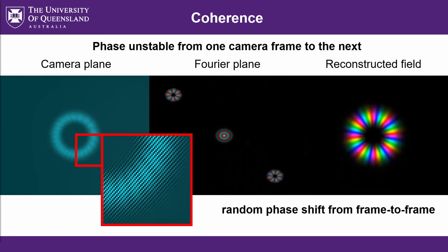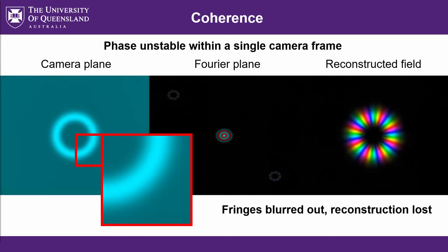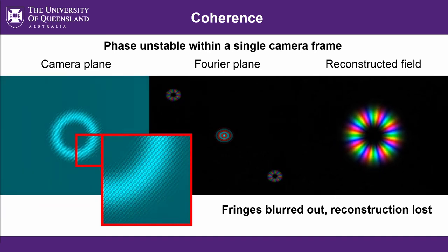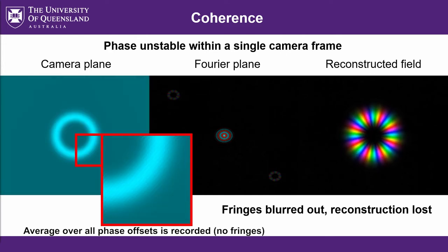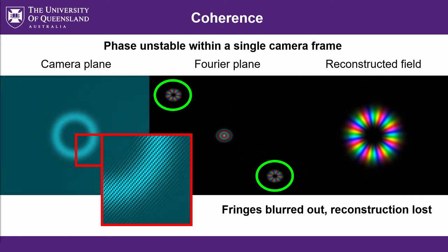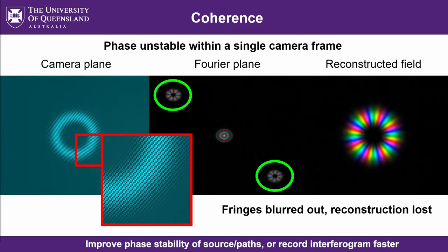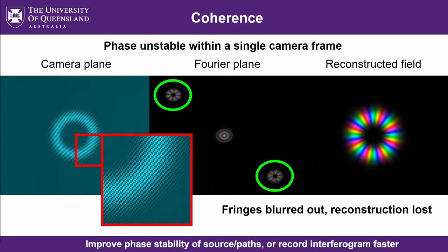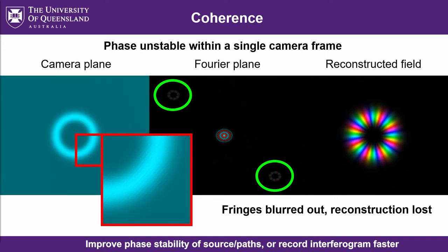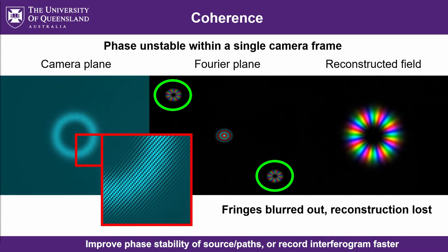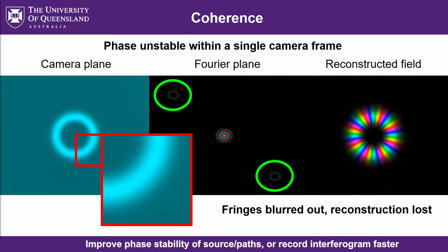That jitter is just a random phase shift and may not affect the quality of your reconstruction — it'll just mean there's some random overall phase from one frame to the next. A bigger problem is if the phase is unstable during the exposure time itself. That means there's no fixed phase relationship over the time period the interferogram is being recorded, and hence your fringes will be washed out and the reconstructed field will drop in power or be lost completely. To fix that you'll need better path length matching, a narrower linewidth laser with longer coherence length, a more powerful light source, or a more sensitive camera so you can shorten the exposure time.